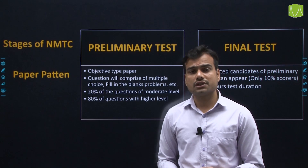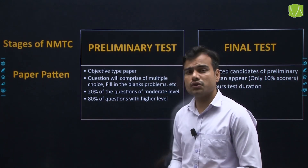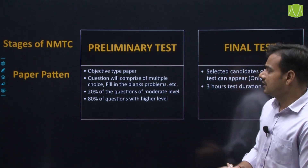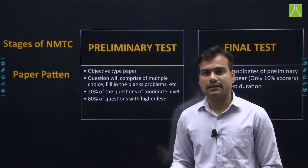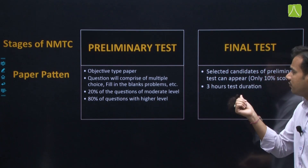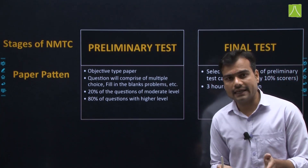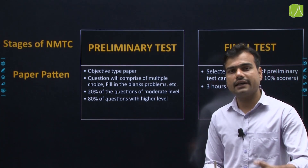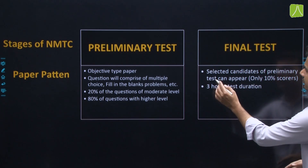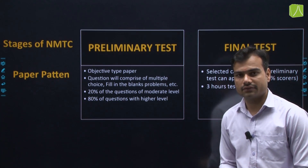In the Preliminary Test, 20% of questions will be at a moderate level and 80% of questions will be at an upper level. Students who clear the Preliminary Test — specifically the top 10% of candidates — will be selected to appear for the Final Test.